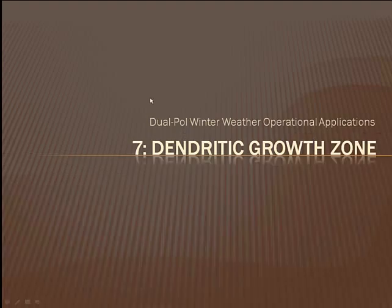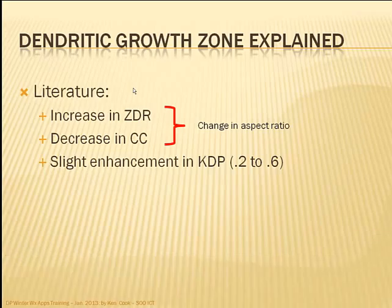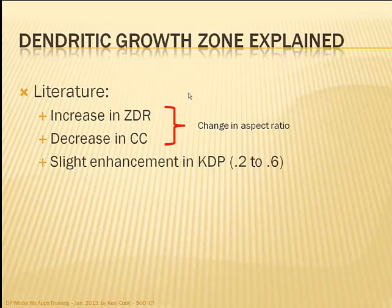The seventh topic — perhaps the most exciting thing we've been looking at in the last few months — is the dendritic growth zone. The literature says there's an increase in ZDR and a decrease in correlation coefficient in the dendritic growth zone as ice particles grow. That's becoming pretty well known. It's partially due to a change in the aspect ratio because you're growing dendrites at an incredibly fast rate. We're also getting a slight enhancement in KDP. Now let's look at a few cases.